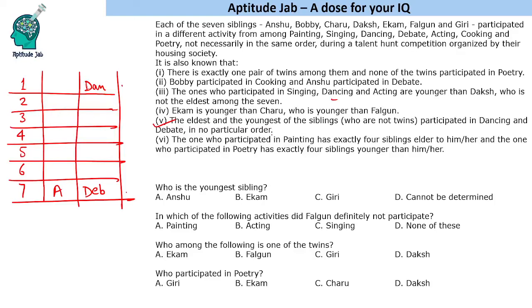The one who participated in painting has exactly four siblings elder to them, and the one who participated in poetry has exactly four siblings younger than them. Since the twins are not in poetry, the person with four younger siblings must be the poetry participant. And the person who participated in painting has four elder siblings.